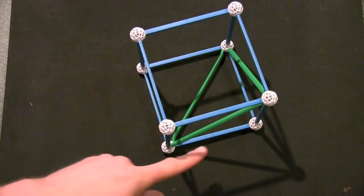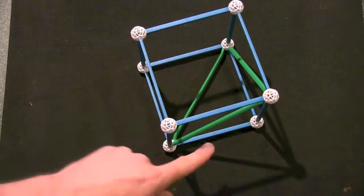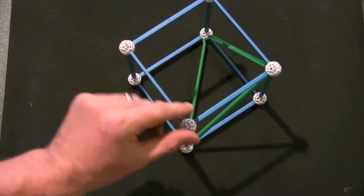So how are we going to find the ratio of this, the volume of this little pyramid here to the ratio of the whole cube?